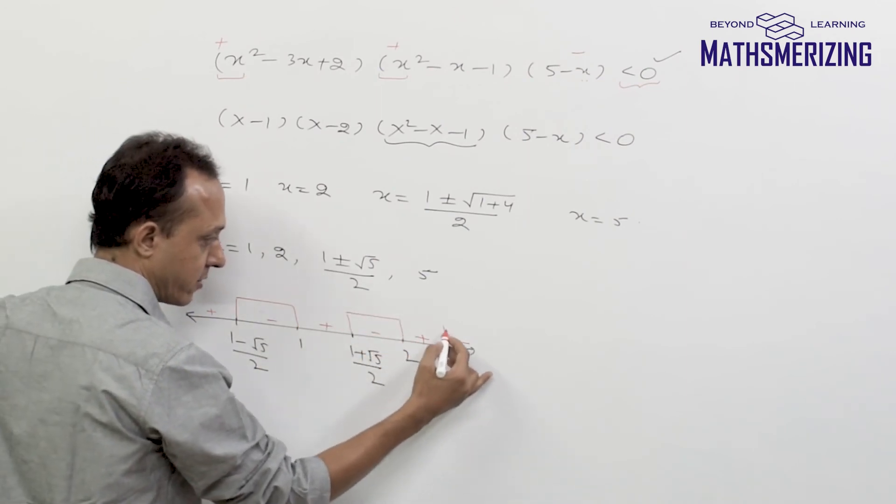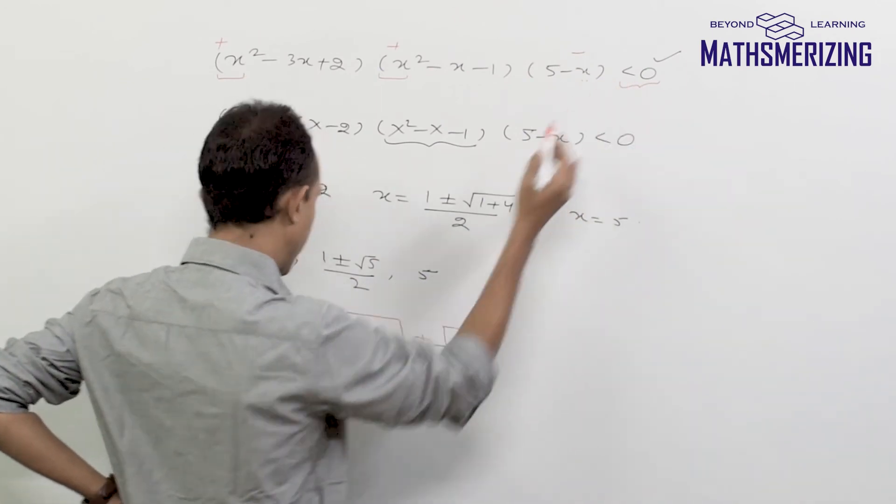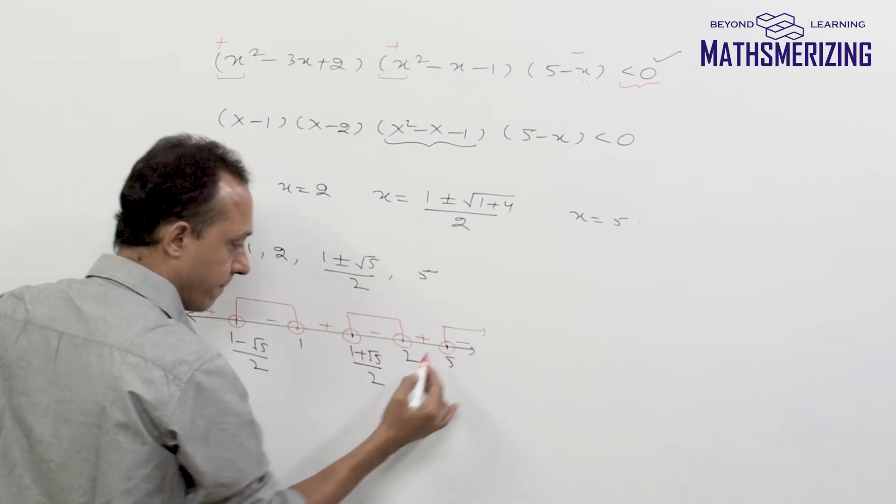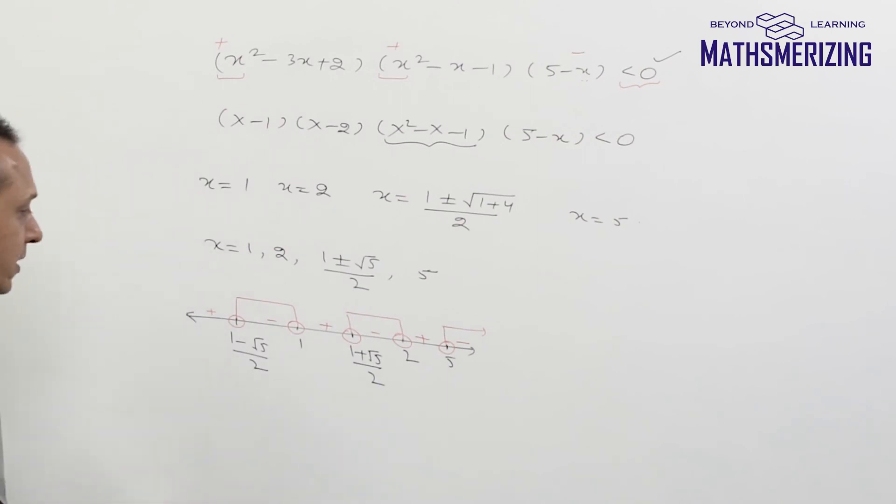It lies here, and it also lies here. And now there is not an equality sign, so I'll simply use open circle. So this is open, this is open, this is open, and that's also open.